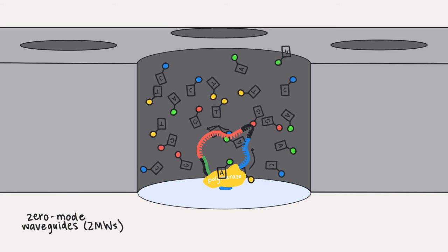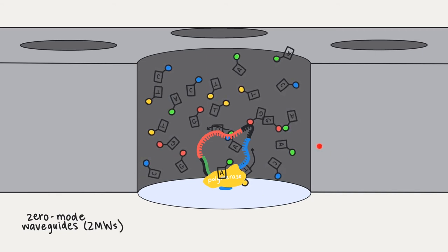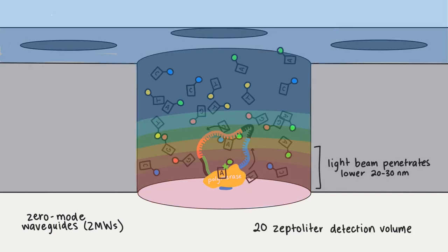Now, how do these zero-mode waveguides work exactly? Remember, ZMWs are cylindrical holes just tens of nanometers in diameter and they're illuminated through the glass bottom by a laser light. Interestingly, the wavelength of this light is too large to actually pass through the opening of the ZMW.